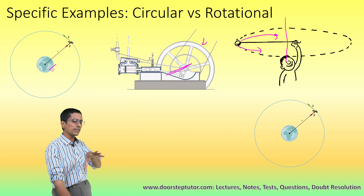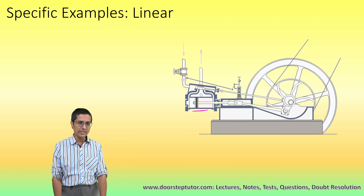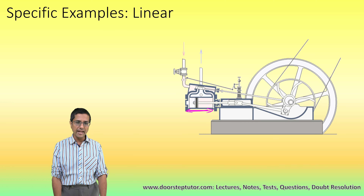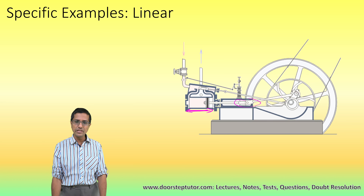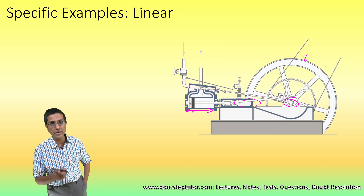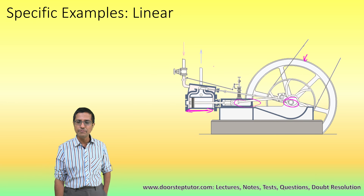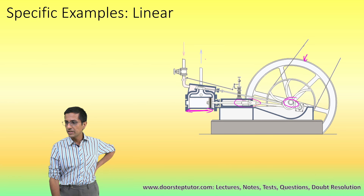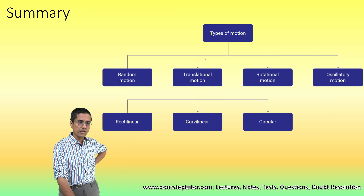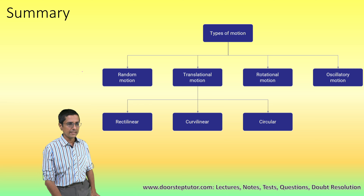This piston is exhibiting linear periodic motion. The crankshaft is used to convert that linear motion into rotational motion. Wheels exhibit rotational motion.